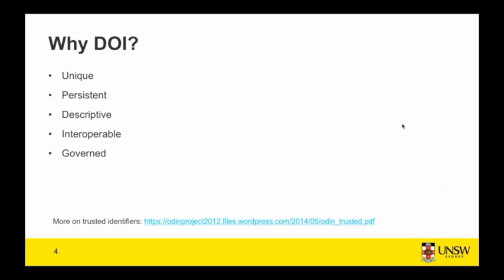So why are DOIs important? They've emerged as a relatively simple but powerful piece of technical infrastructure in improving scholarly communication. They make it easier for outputs to be discovered and used by others and to be cited and measured for impact. A useful way to think about DOIs is as a trusted identifier, which is a term introduced a few years ago by a project called ODIN, the ORCID and DataCite Interoperability Network.